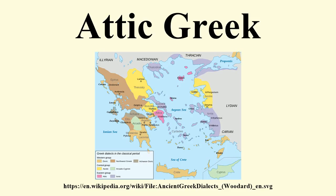Loss of W: Proto-Greek W was lost in Attic before historical times. For example, Proto-Greek 'chor' (where) became Attic 'chor' (girl). Retention of H: Attic retained Proto-Greek H, but certain other dialects lost it. Proto-Indo-European *stamen became Attic 'histamen', Cretan 'istamon' (we stand).